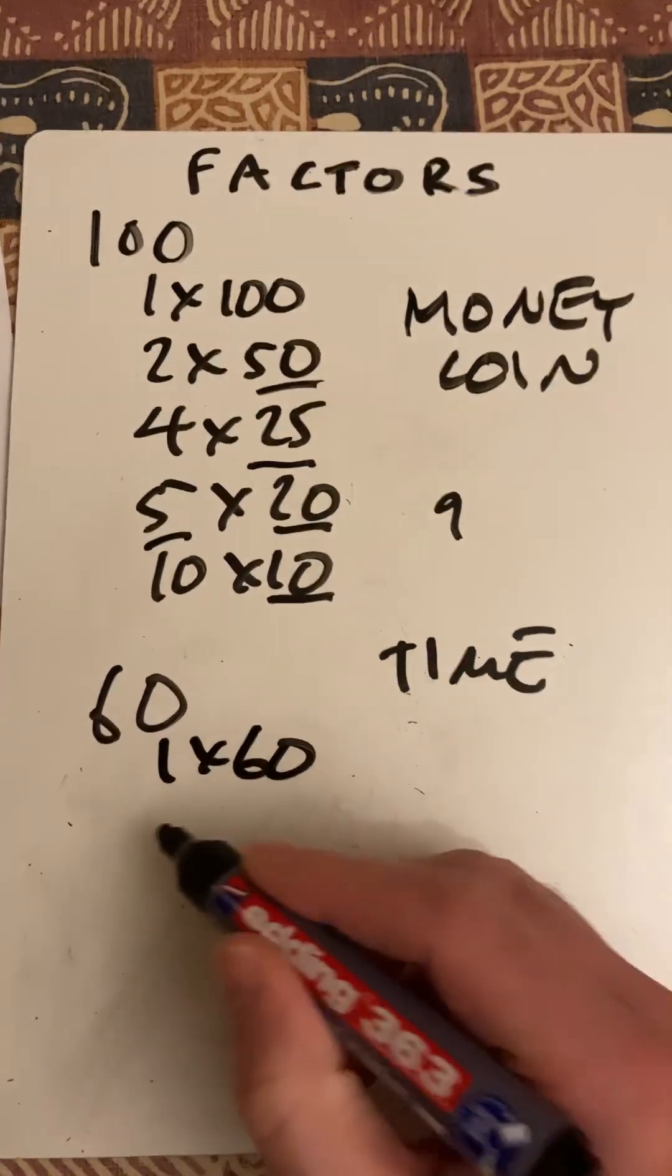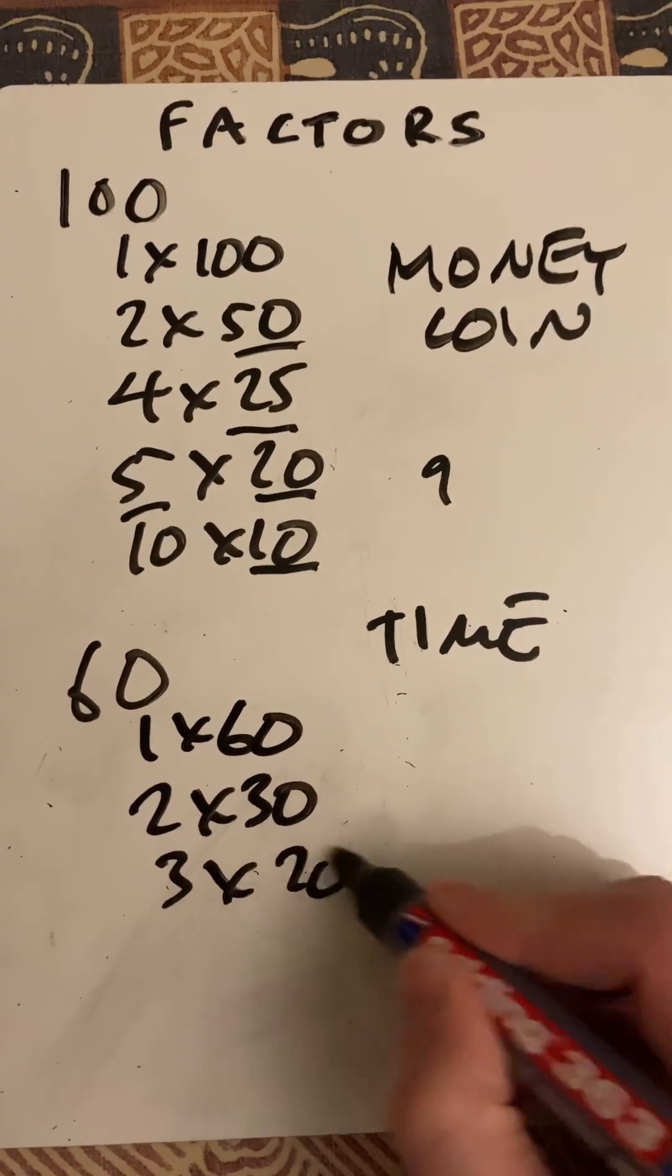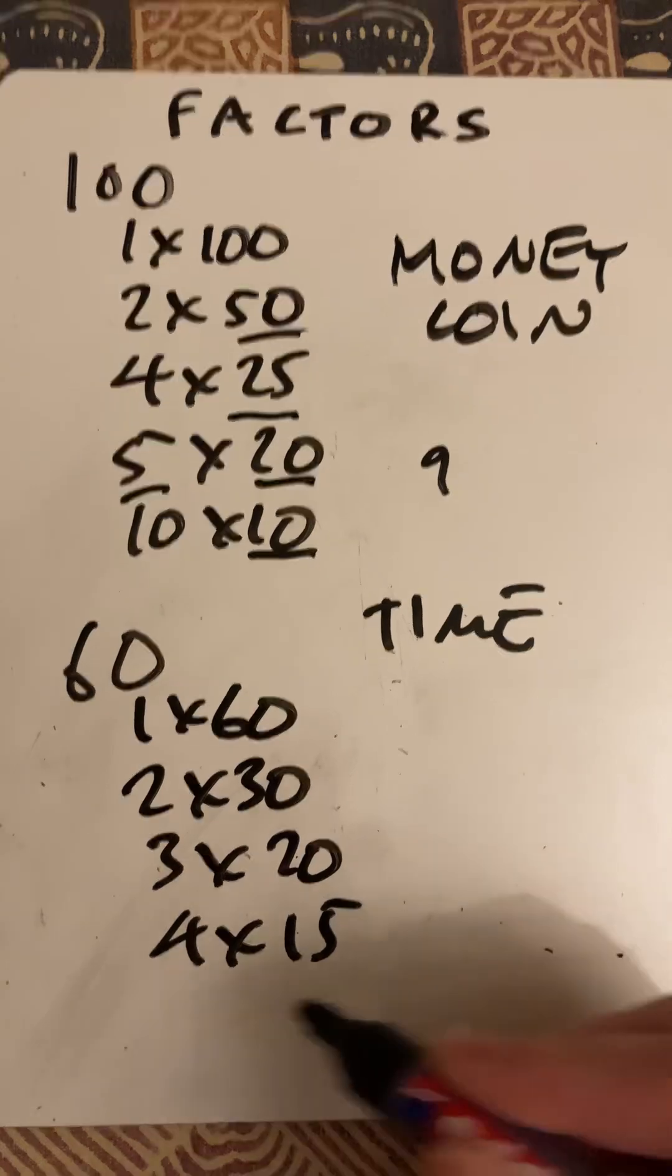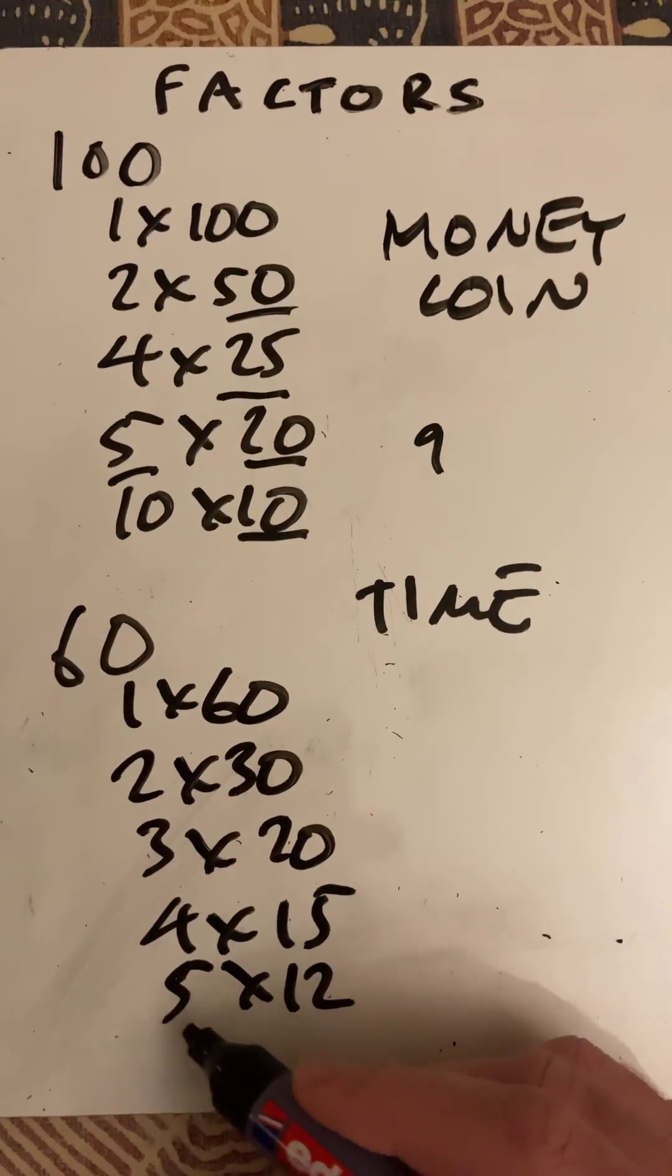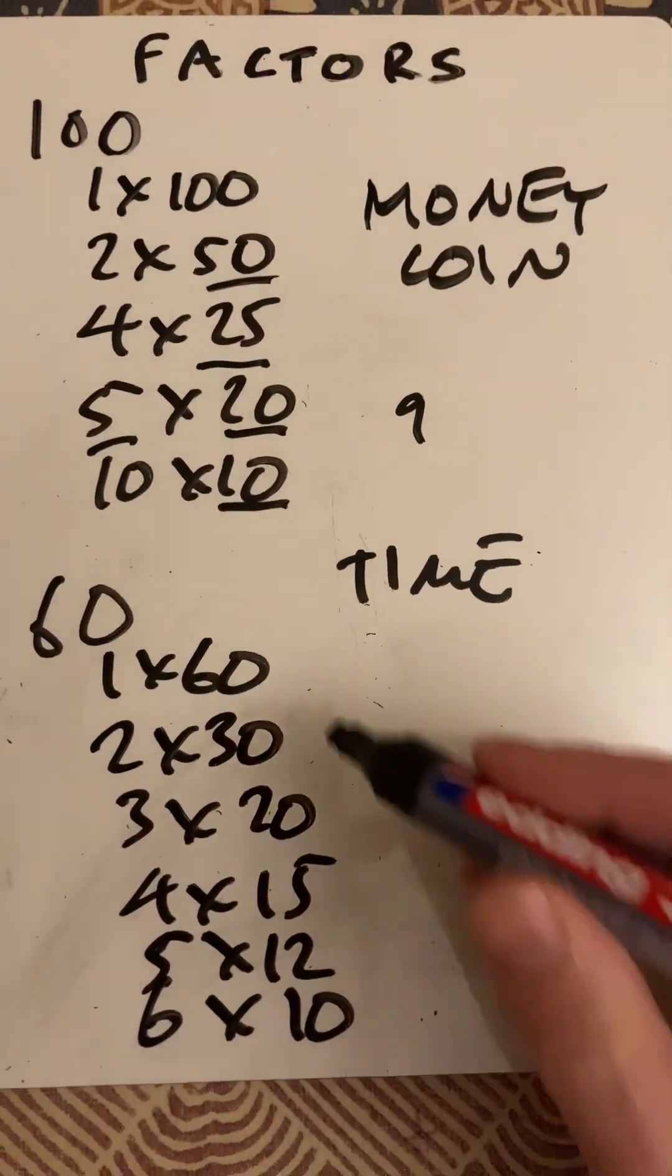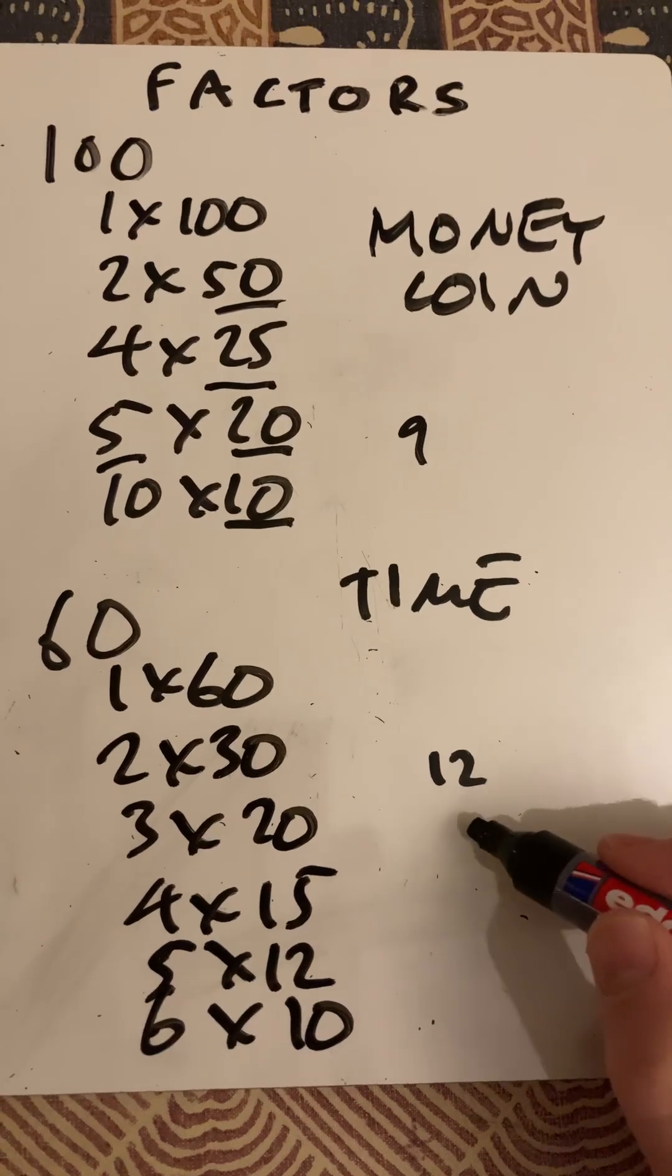1 times 60, 2 times 30, 3 times 20, 4 times 15, 5 times 12, and 6 times 10. We actually have 12 different factors here.